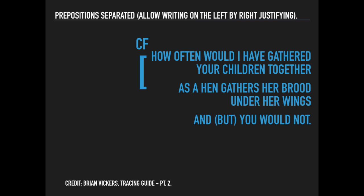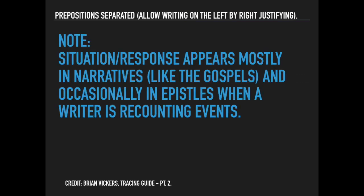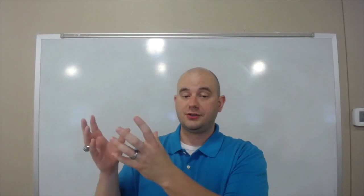Jesus is comparing his gathering of Israel together to a hen gathering her brood under her wings, so that's a comparison — we're going to mark that with CF, comparison. How does this comparison fit with the third proposition? The situation is Jesus desiring to gather children together as a hen gathers her brood under her wings, and the response to that situation is the refusal: and you would not. So the situation is the attempt to gather; the response is and you would not. A situation response appears mostly in narrative, like in the Gospels, and occasionally in the epistles when a writer is recounting events.